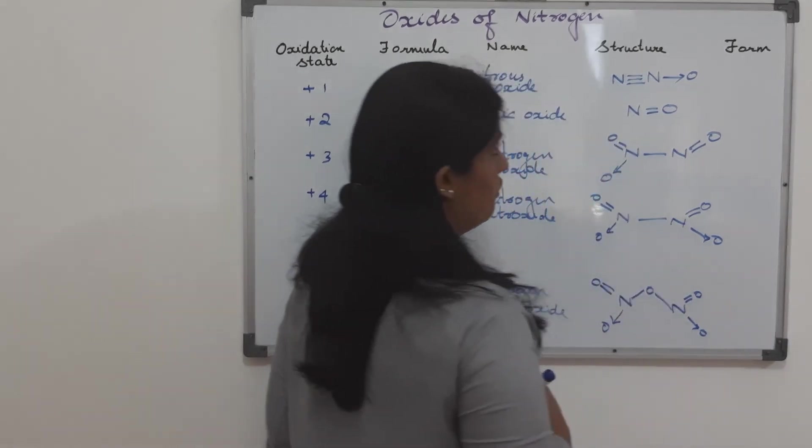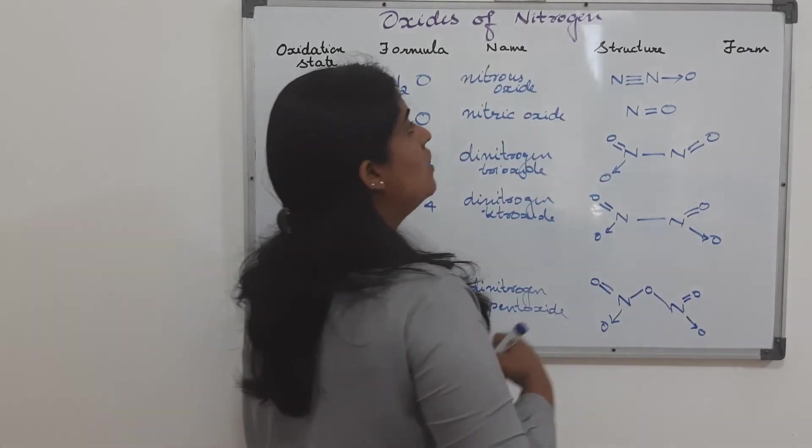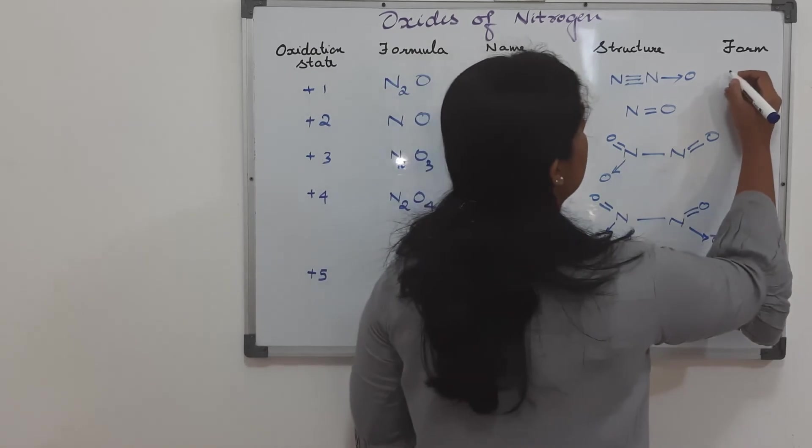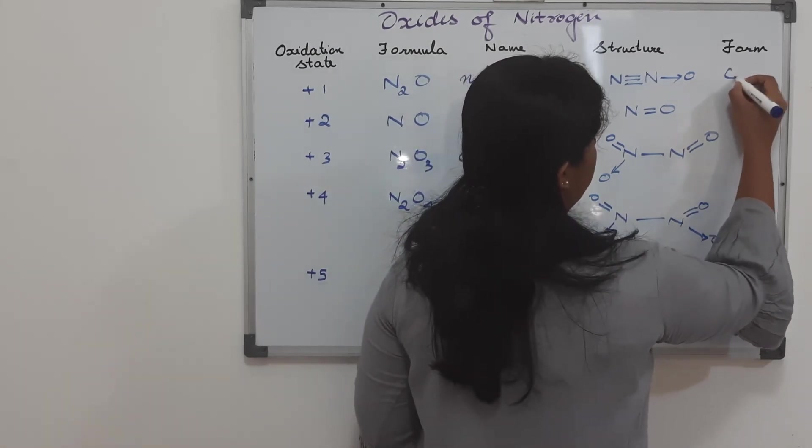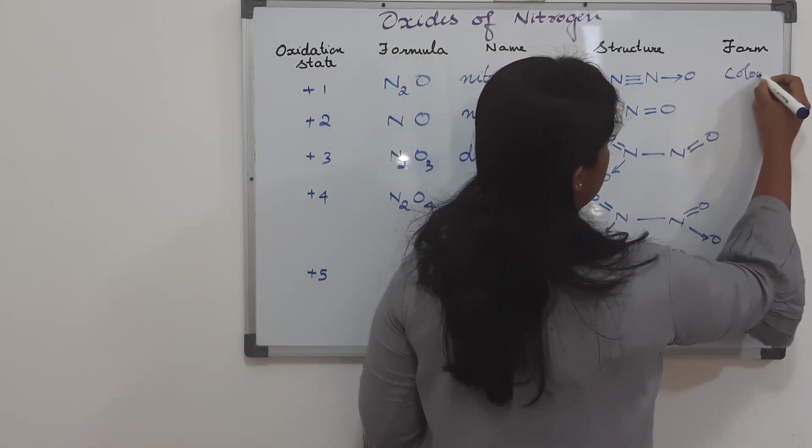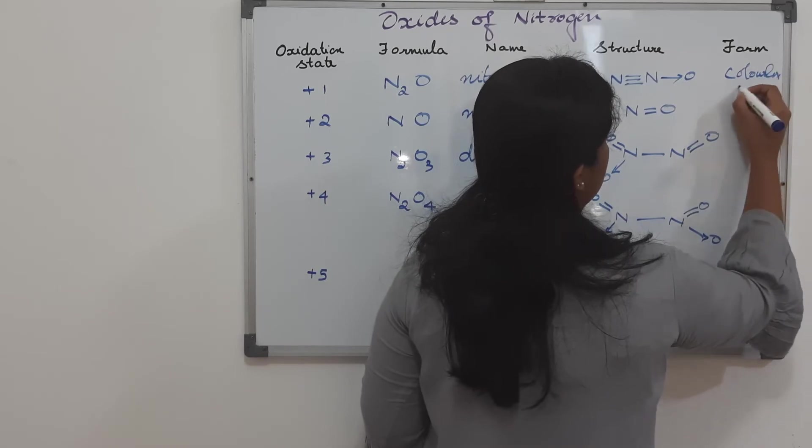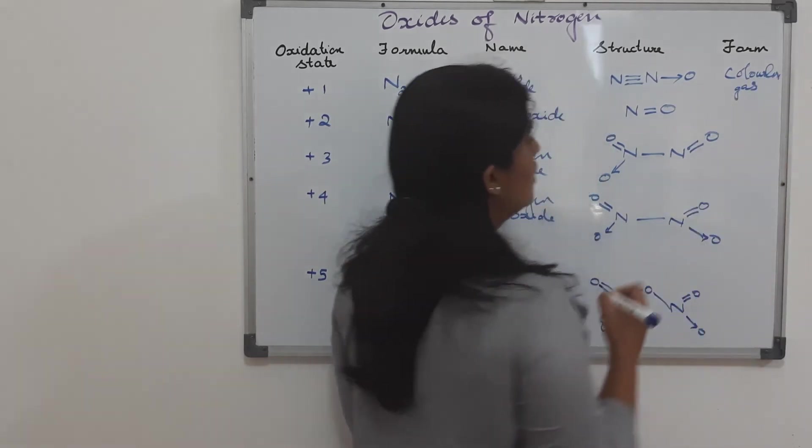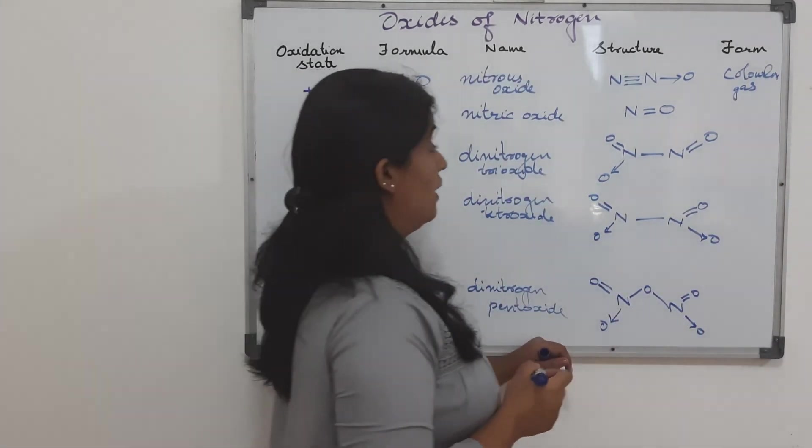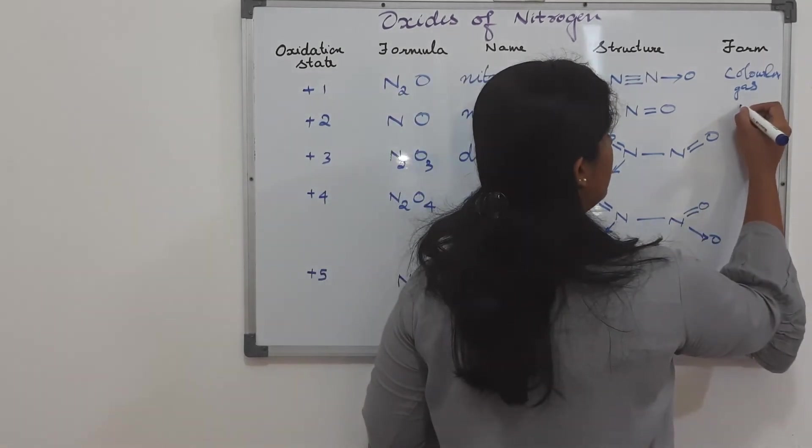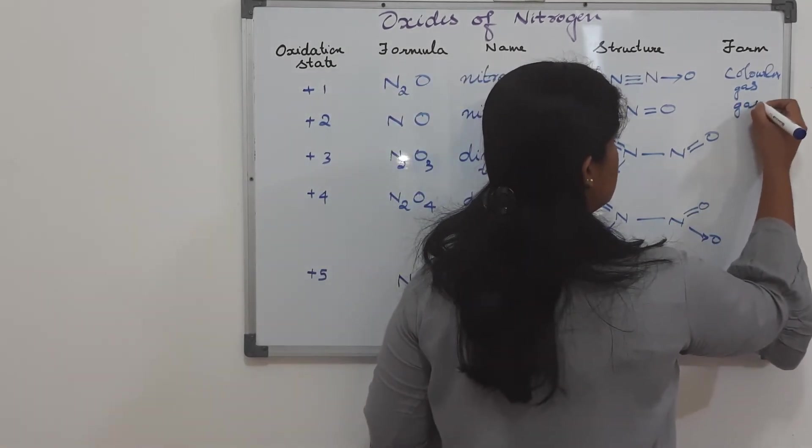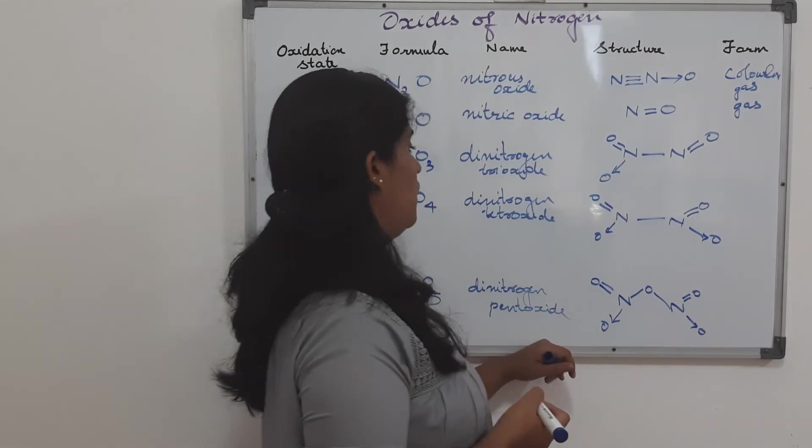And now, if you look into their form, we can say that this first one, nitrous oxide is a colorless gas. Similarly, nitric oxide is also a colorless gas.